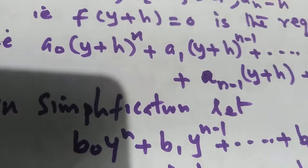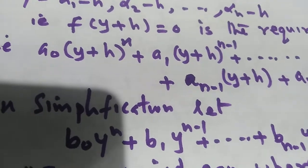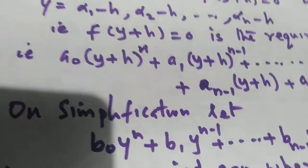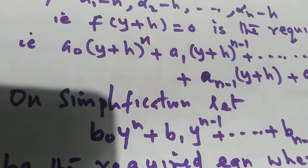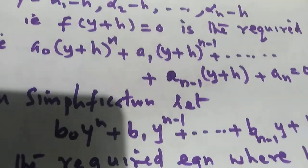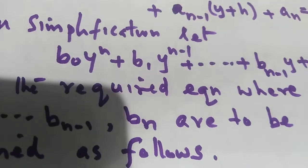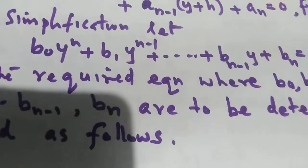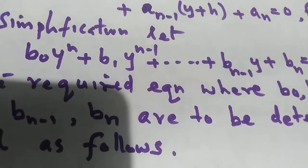Then, to simplify it, we have to collect the terms in y raised to n, then y raised to n minus 1, etc. Finding the coefficients of y raised to n, y raised to n minus 1, etc., is difficult here. So we assume those coefficients are b0, b1, etc., and write: b0 times y raised to n, plus b1 times y raised to n minus 1, plus etc., plus b(n-1) times y, plus bn equal to 0, where b0, b1, etc., bn are unknown at present.